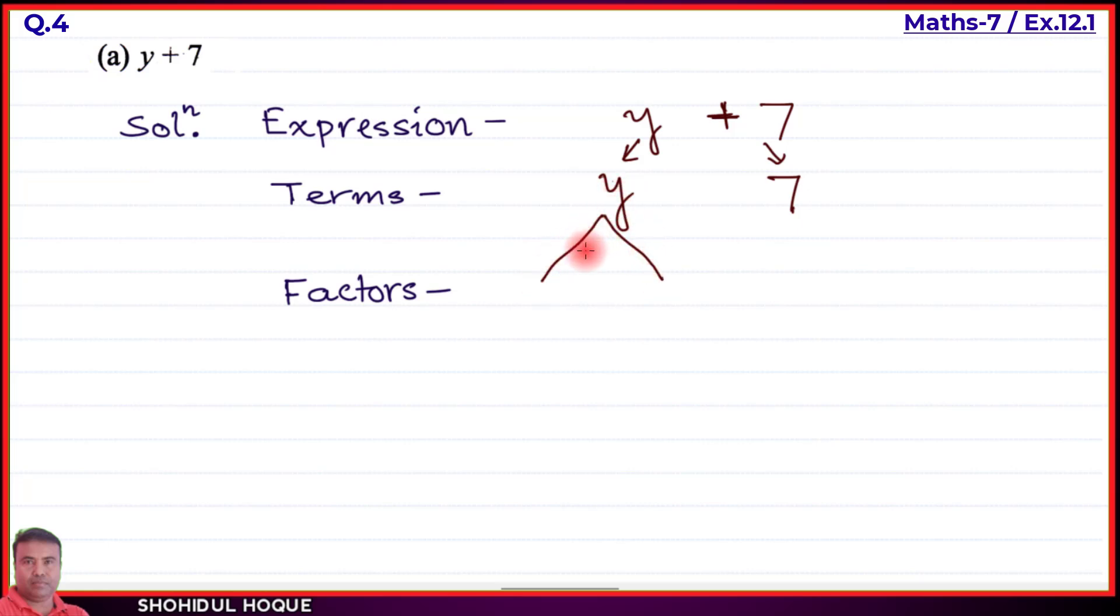The second term is 7, which is a constant with factor 7. This shows the expression, terms, and factors using the tree method.